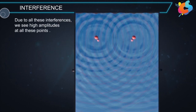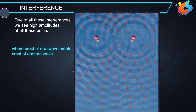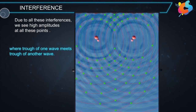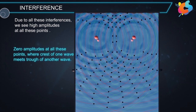Due to all these interferences, we see high amplitudes at all points where the crest of one wave meets the crest of another wave, and at all points where the trough of one wave meets the trough of another wave. Similarly, we see zero amplitude at all points where the crest of one wave meets the trough of another wave.